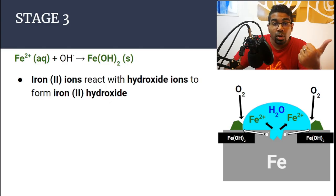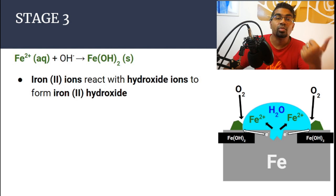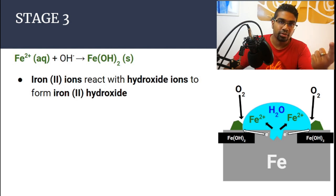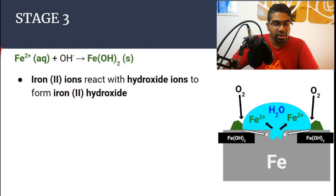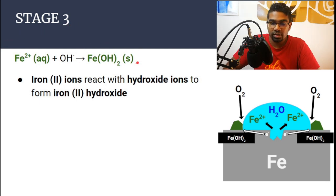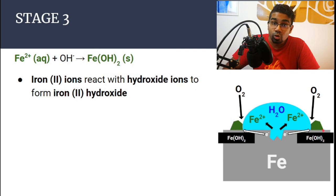Now we have iron-2 ions and hydroxide ions. The next stage is that both of them react to form iron-2 hydroxide, which is a solid. So the first solid that occurs at the edge is actually iron-2 hydroxide.